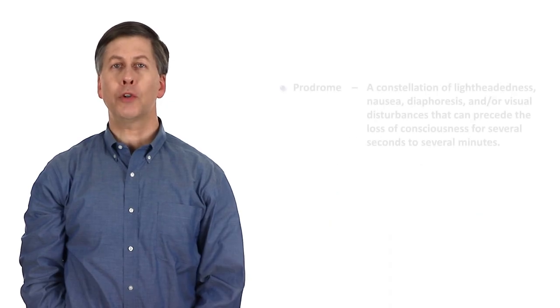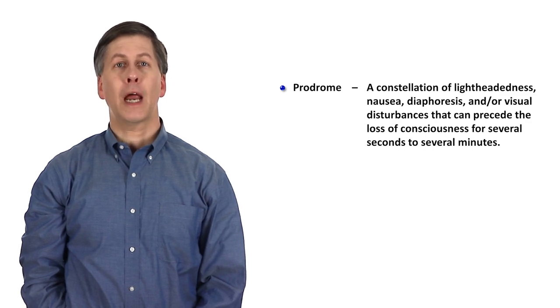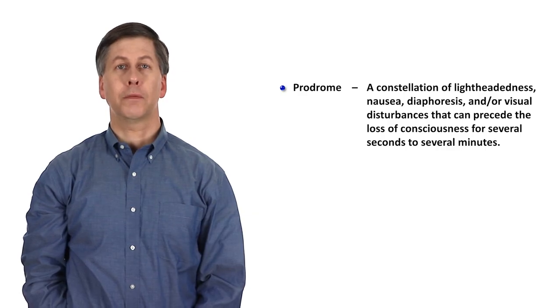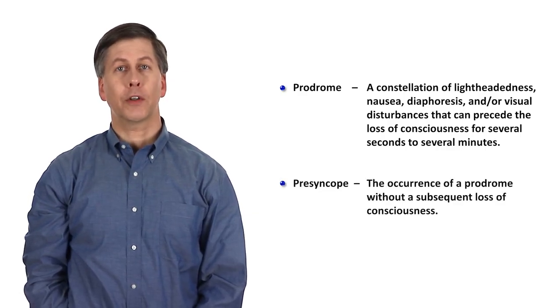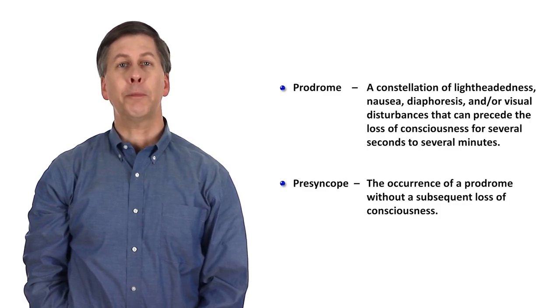In addition, syncope may be associated with a prodrome, including lightheadedness, nausea, diaphoresis, and visual disturbances that can precede the loss of consciousness for several seconds to several minutes. The occurrence of a prodrome without a subsequent loss of consciousness is referred to as presyncope. Syncope, presyncope, and isolated transient lightheadedness all exist on a spectrum and have the same etiologies.